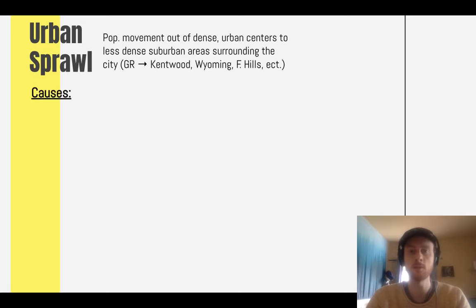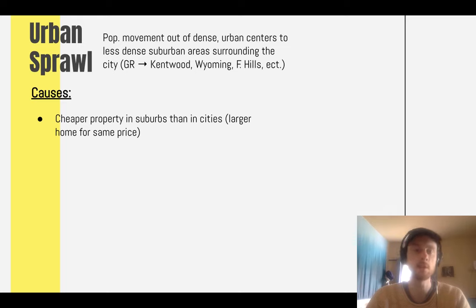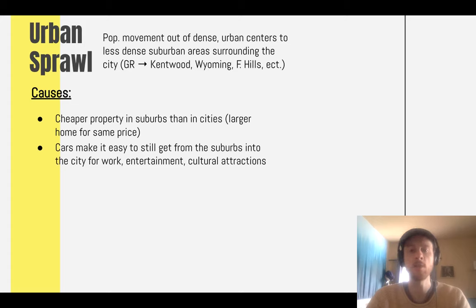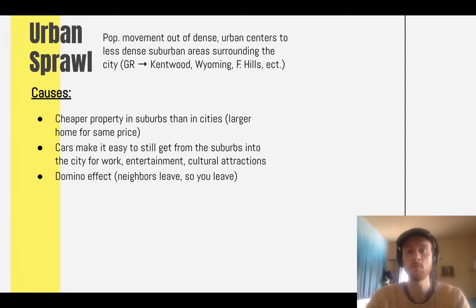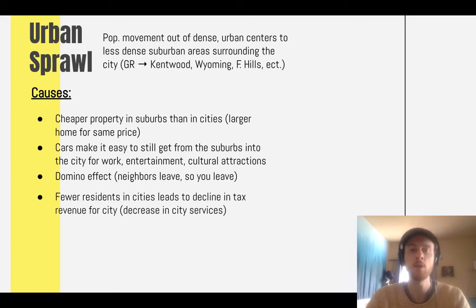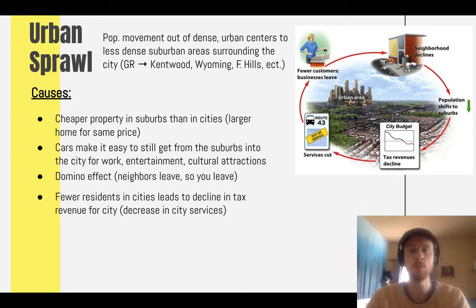One main cause of urban sprawl is cheaper property values — you can buy a larger piece of land and a larger home for the same price in a suburb compared to a densely packed city. Another cause is the affordability of cars and gasoline, making it easy to live in the suburbs but commute into the city for work or entertainment. Then there is the domino effect: as you see neighbors leave densely packed urban areas, you're more likely to leave as well, creating a positive feedback loop where fewer residents means a declining tax base, forcing the city to cut services like police patrols, bus routes, and park maintenance. This drives even more residents and businesses to move to the suburbs.